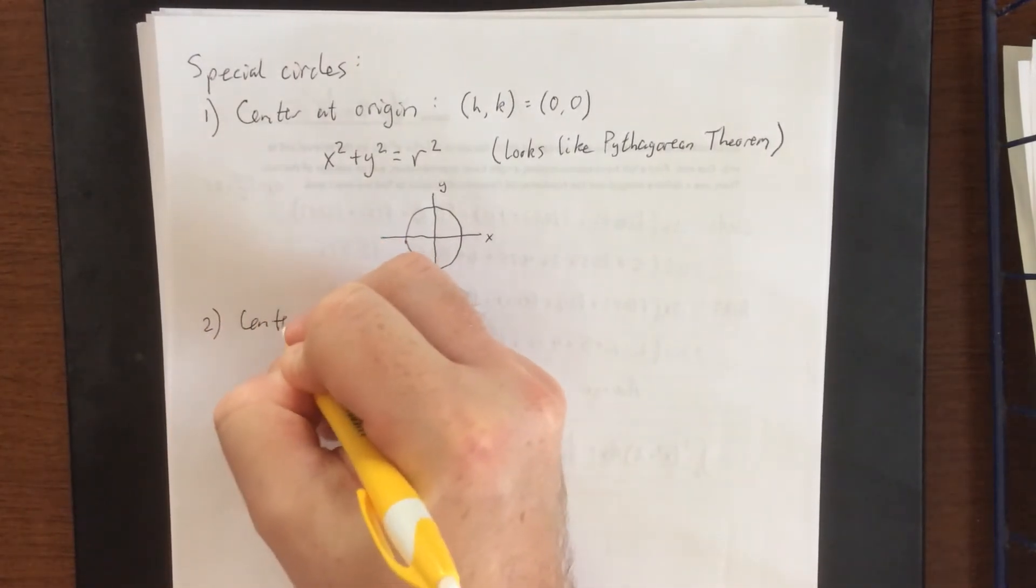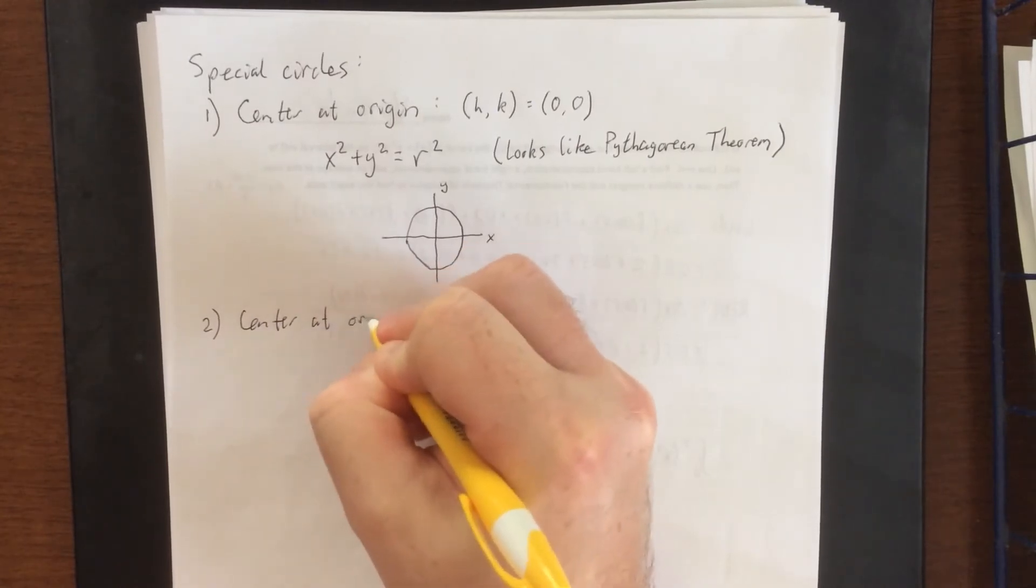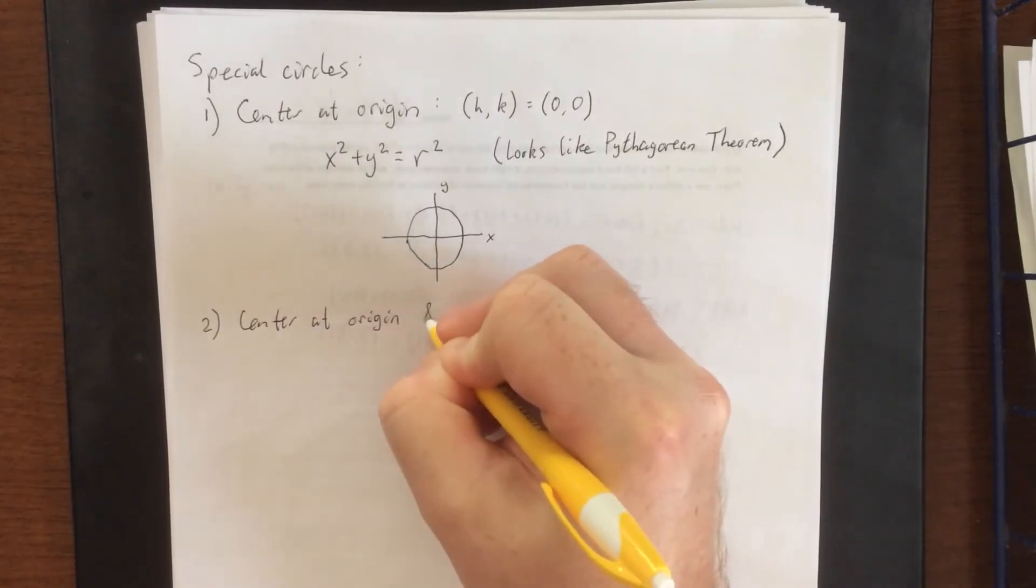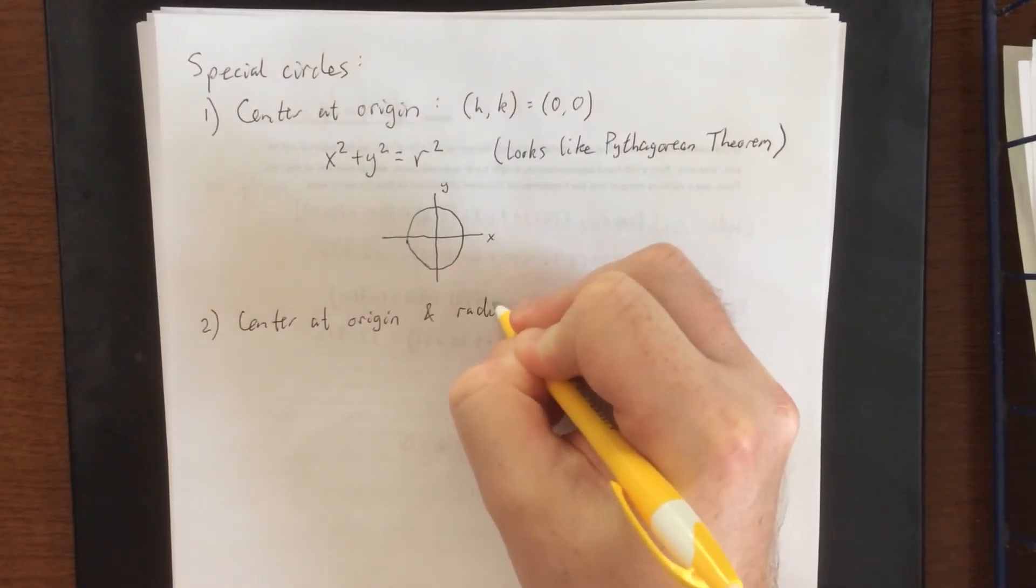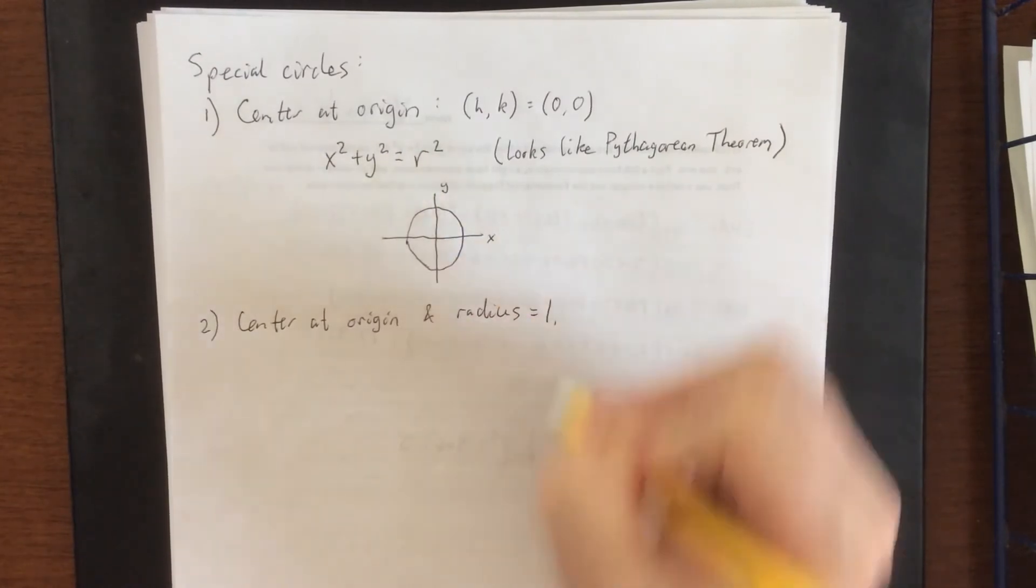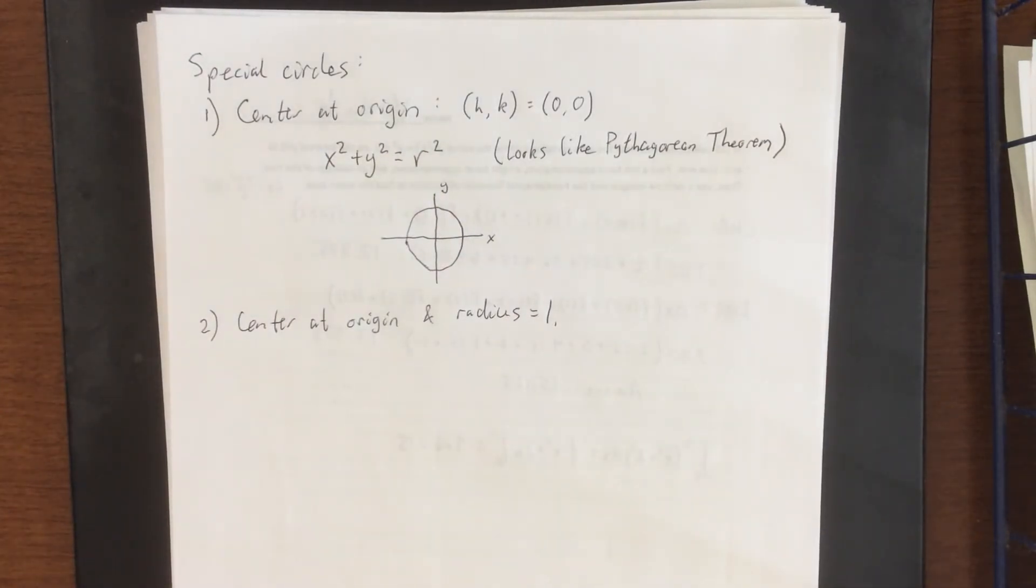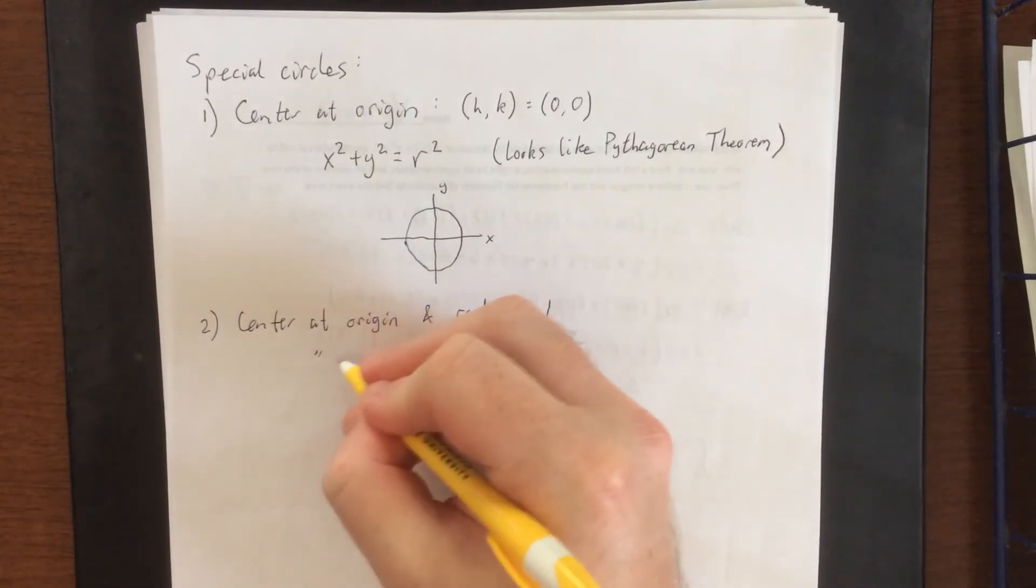Next one is going to be where the center is at the origin and the radius is equal to 1. This is a circle that's going to come up a lot later on in the semester. It does have a special name.